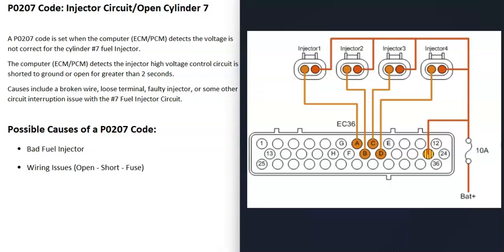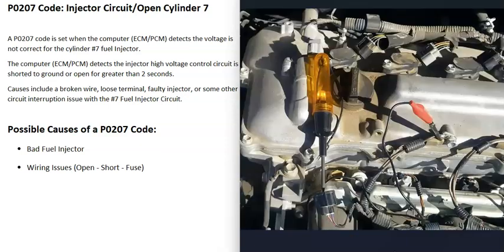It's always a good idea to get wiring schematics for your particular vehicle so you know for sure what's going on. Usually, how these fuel injector circuits work is that when the key is in the on position, you're going to get voltage going to that circuit, which is usually 12 volts. So one of the wires going to that fuel injector when the key is on should be hot, usually with 12 volts. You can use a 12-volt test light or a multimeter to check and be sure you're getting voltage going to cylinder number 7. If you're not, you know there's an issue and you need to find out why.